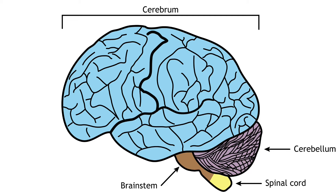The cerebral hemispheres in humans have many folds to increase the surface area of the brain. The ridges are called gyri, and the grooves are called sulci. Large sulci are often called fissures.